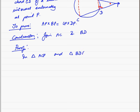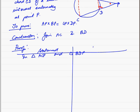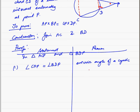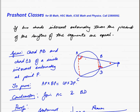Statement: angle CAP is equal to angle BDP. The exterior angle of the cyclic quadrilateral is equal to the interior opposite angle.